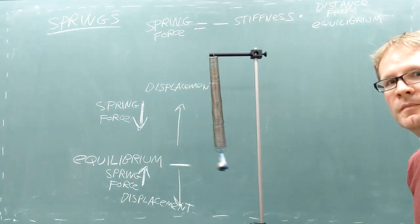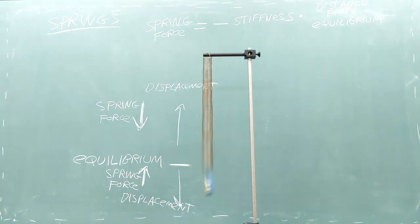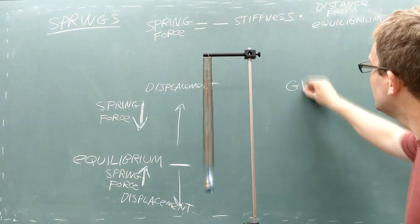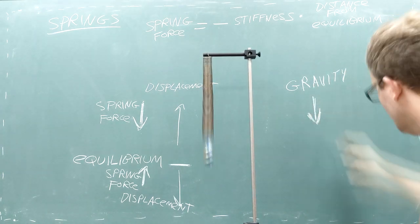A common experiment in physics involves hanging a block from a spring and watching it oscillate. In this experiment, the block experiences two forces: the spring force that could point upward or downward depending on where the block is, and the force of gravity from the Earth, which always points downward.